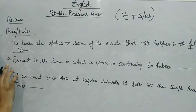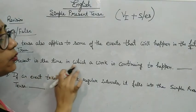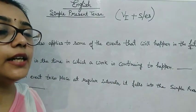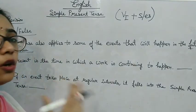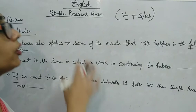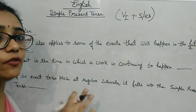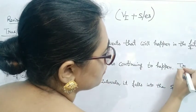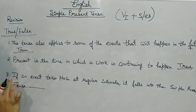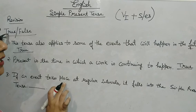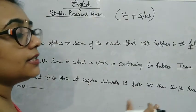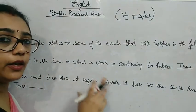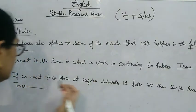Second statement: present is the time in which a word is continuing to happen — any work going on at the current time is present tense. This is also true. Third statement: if an event takes place at regular intervals, it falls into simple present tense — this is in the definition itself, so this is also true.